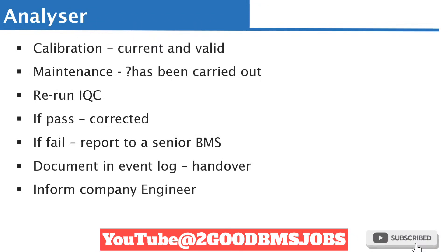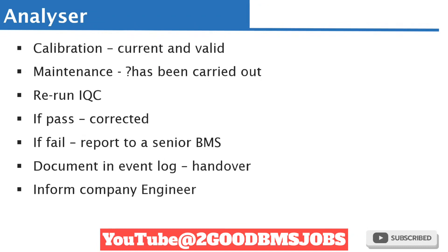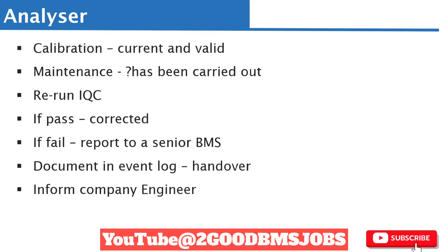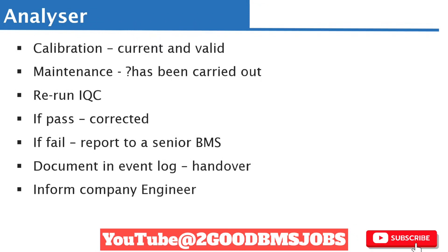If you have done all you could and were not able to solve the problem — if you reran the internal quality control and it continued to fail — then once you have reported it to a senior and documented it in the event log, the next thing is to inform the company engineers and ask them to come and look at the analyzer. Before the engineer arrives, it is advisable to put a sign saying the analyzer is temporarily out of use, or isolate it so someone else will not use it.